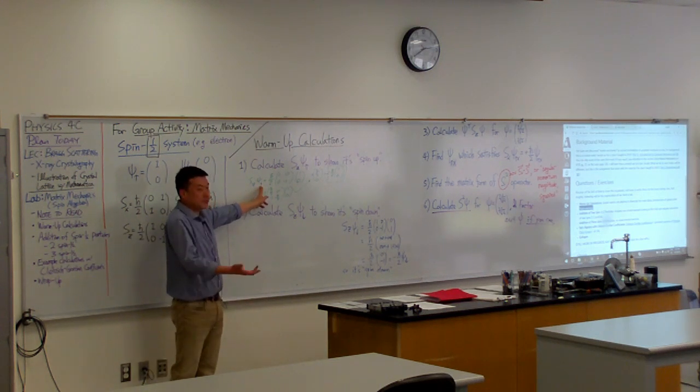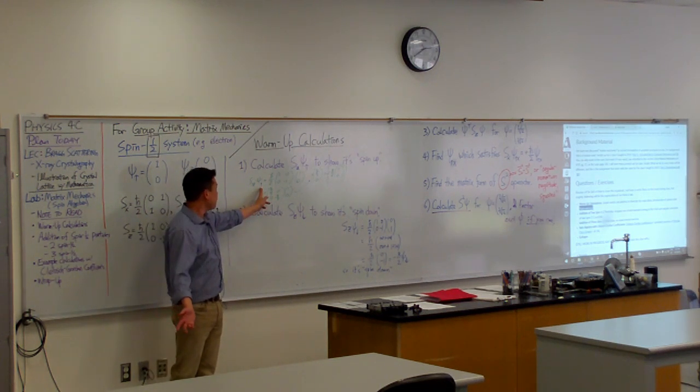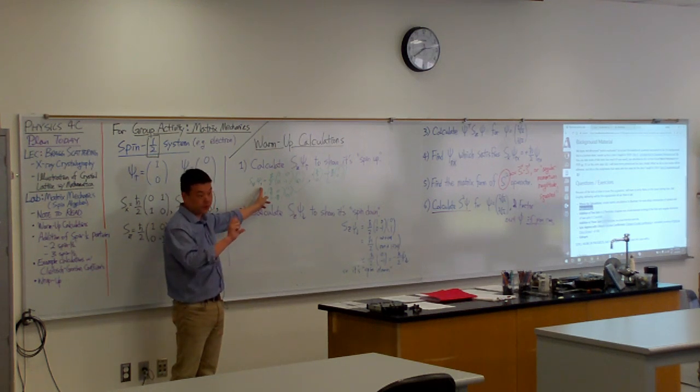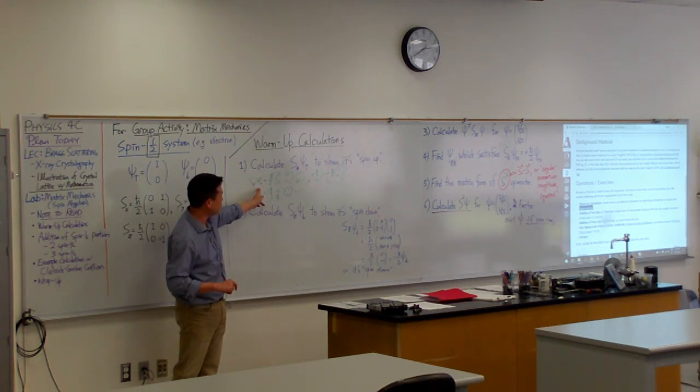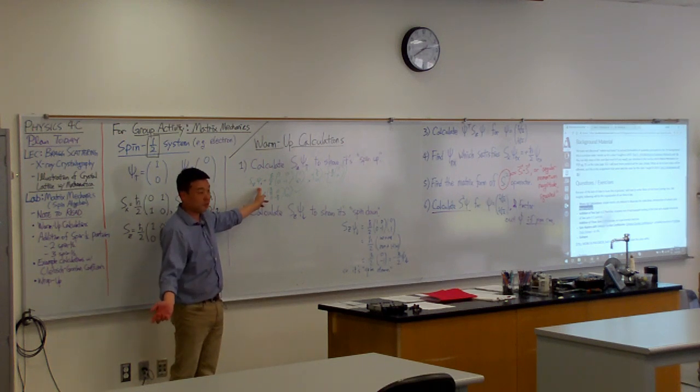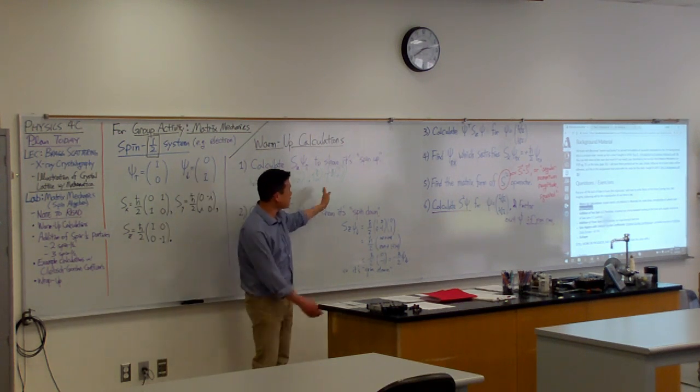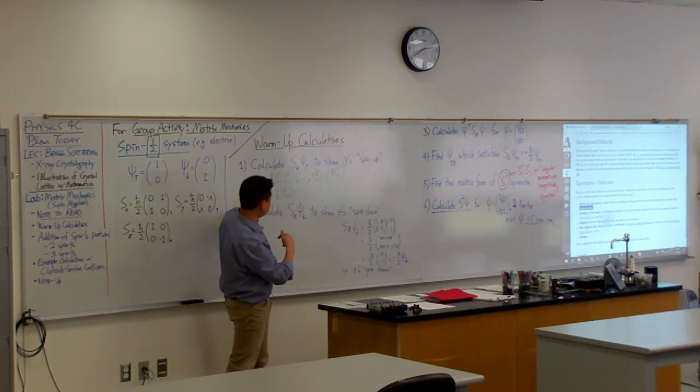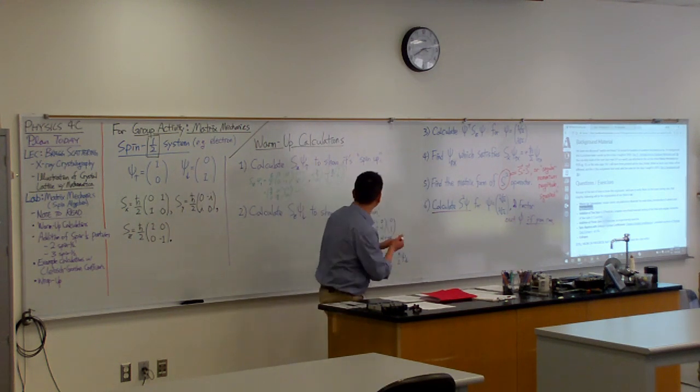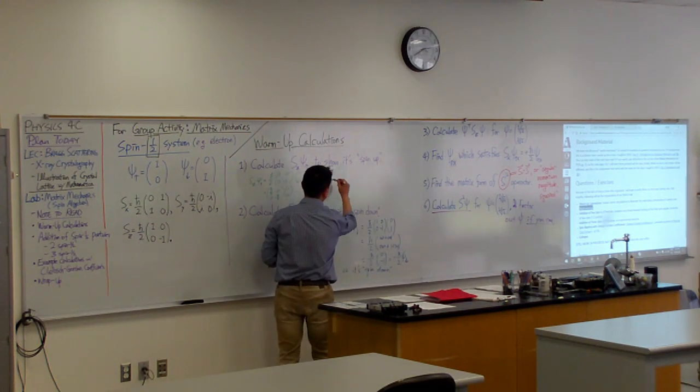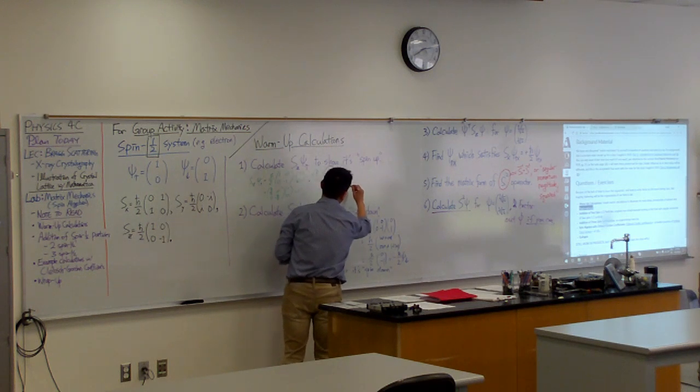So you have a state which you maybe suspect is an eigenstate, or it's a state with a definite particular value for the thing you are measuring. And if your guess turns out to be correct, then after you apply the operator, by which we mean do the matrix multiplication, you get an end result that you can factor into the original state and a simple scalar coefficient.